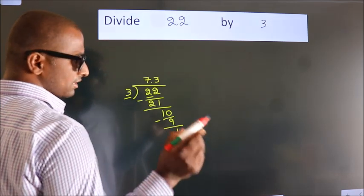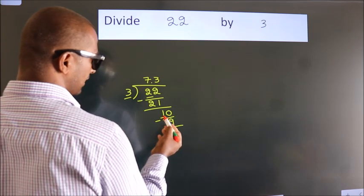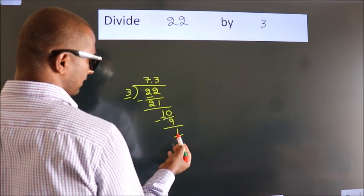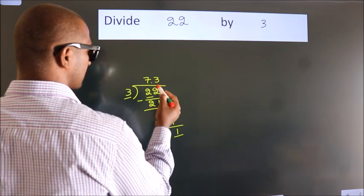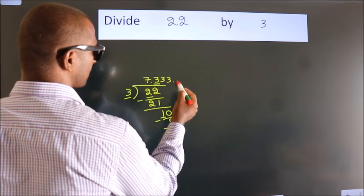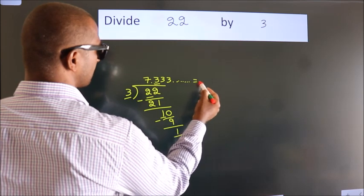Now, you observe. We had 1 here and we got 1 again. That means this number keeps on repeating. So, this is our quotient.